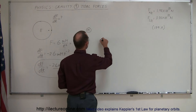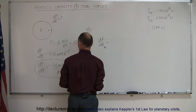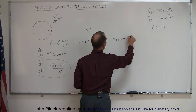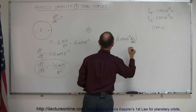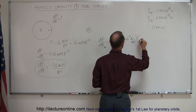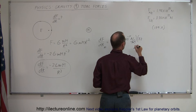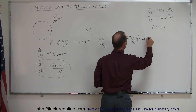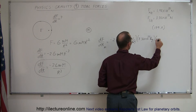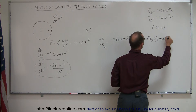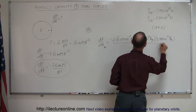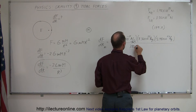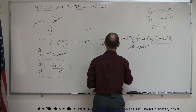Let's calculate the dF/dR for the Moon. That's going to be minus two times G, which is 6.67 times 10 to the minus 11 N·m² per kg², multiplied by the mass of the Moon, 7.36 times 10 to the 22 kilograms, times the mass of the Earth, 5.98 times 10 to the 24 kilograms, divided by the distance between the Moon and the Earth — 385,000 kilometers, or 385 million meters — and now we have to cube that number.